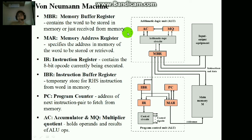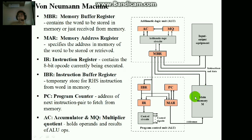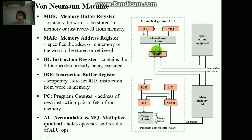In the von Neumann machine we have various types of registers. The first one is MBR, the memory buffer register. It contains the word which is to be stored in memory or which is just received from memory. MBR directly communicates with main memory — main memory gives things to MBR and MBR gives things back to memory. MBR is also directly connected to the arithmetic logic unit, other registers, and input/output equipment. So MBR is the central point of IAS architecture.